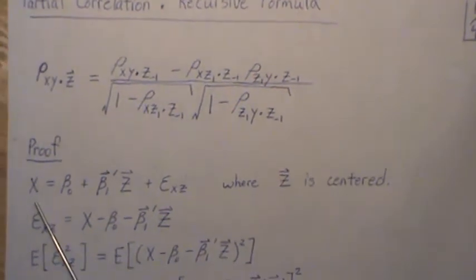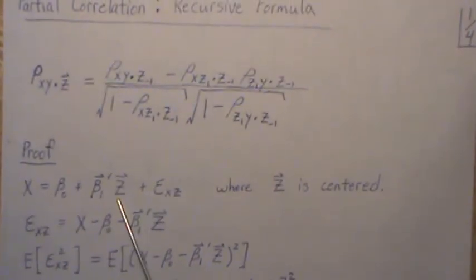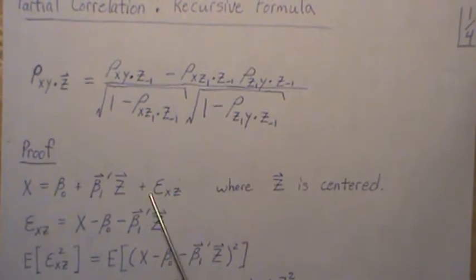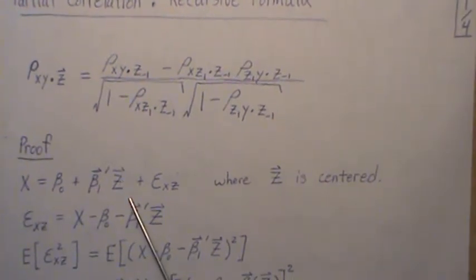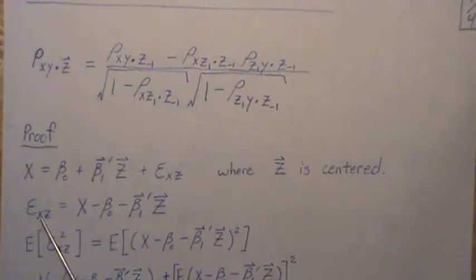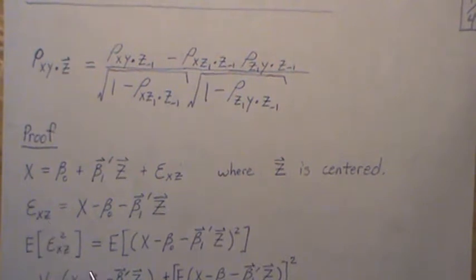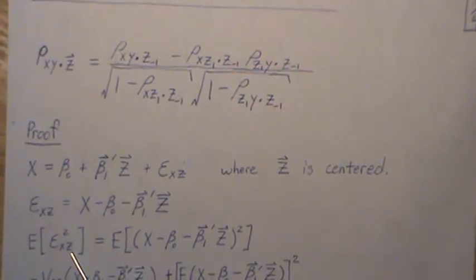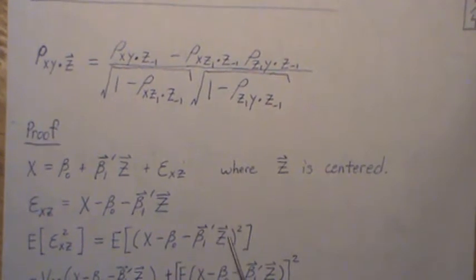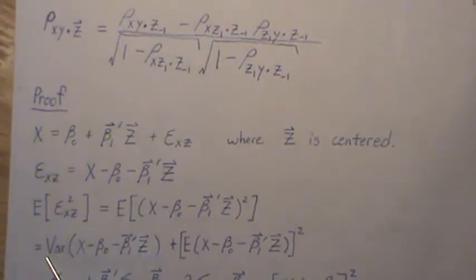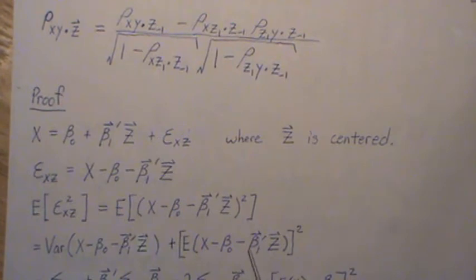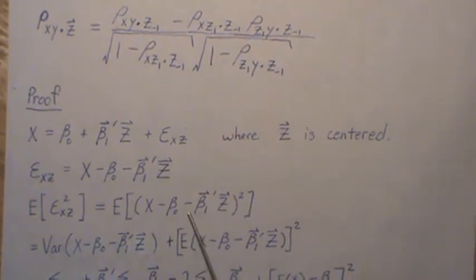So here we're going to take x and regress it onto z, and this is what we get. We're going to assume z is centered, and so that means subtract the mean for each component, and then we can find the residuals, and we're going to call it epsilon_xz because we regressed x onto z, and we're going to look at the expected or average squared residuals, which then we get this, and then the expected value of something squared is equal to the variance of that plus the mean squared of this quantity.